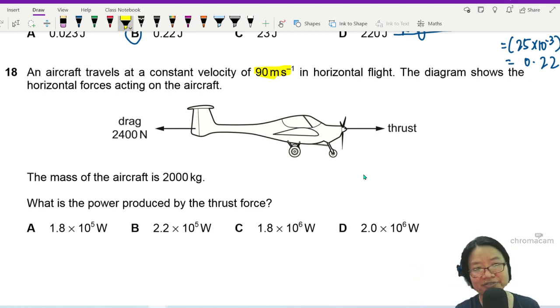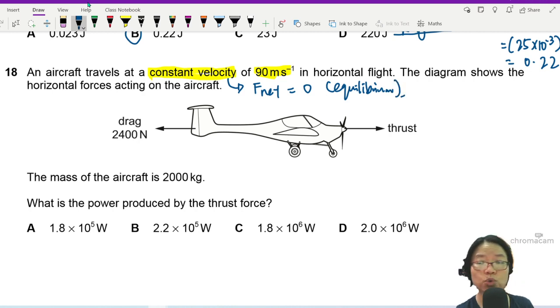Constant velocity is a very nice thing because I know that our object is in equilibrium or the net force is zero. Motion will not change.